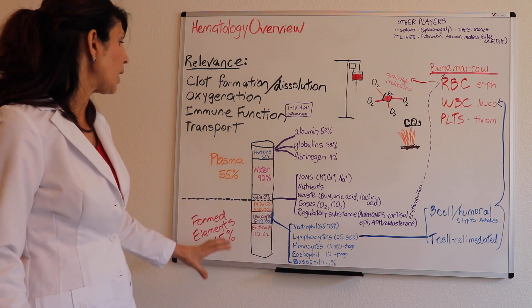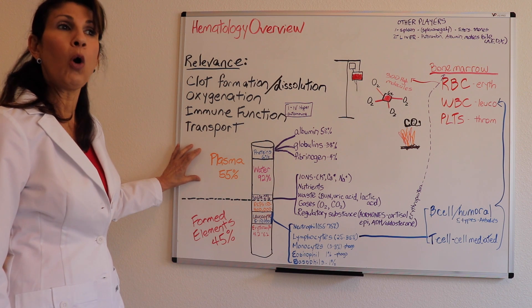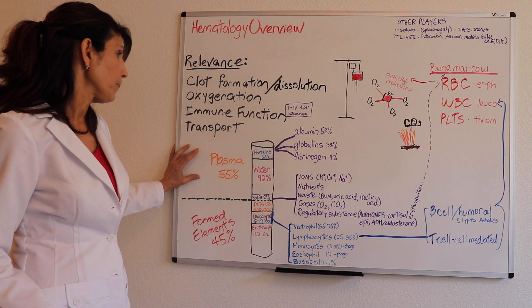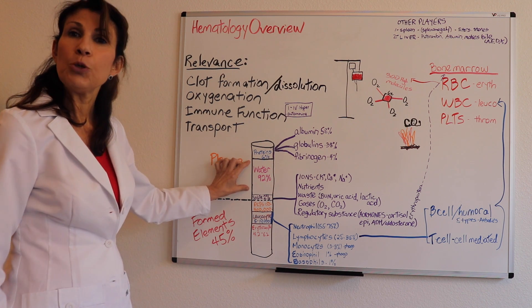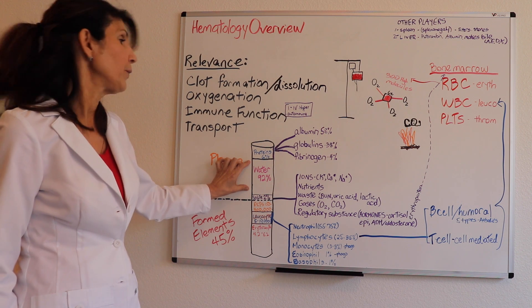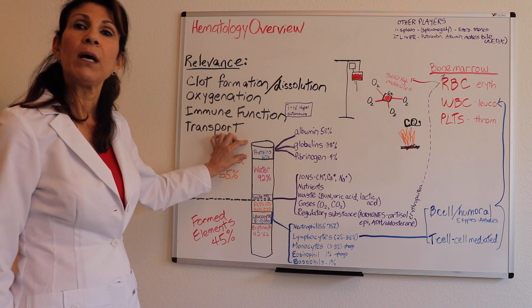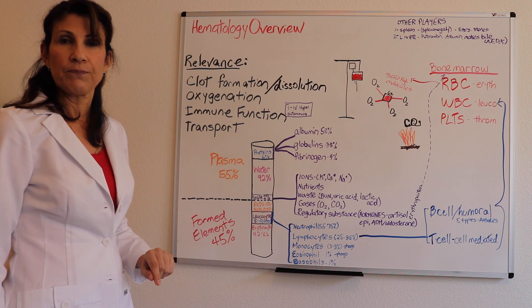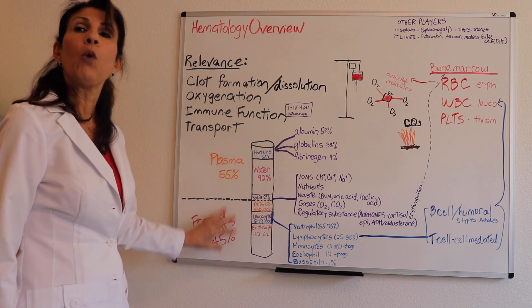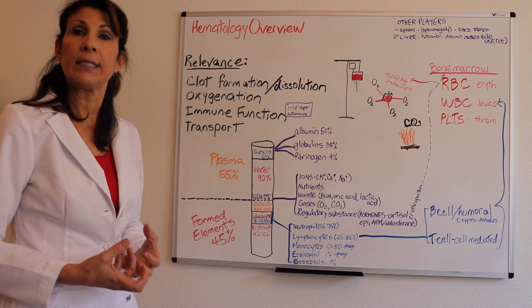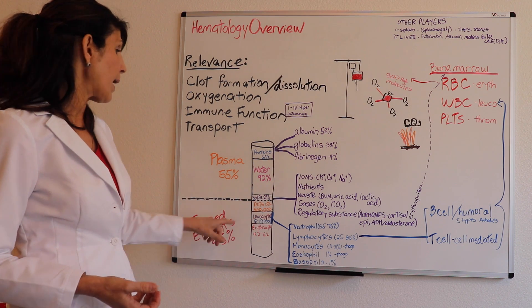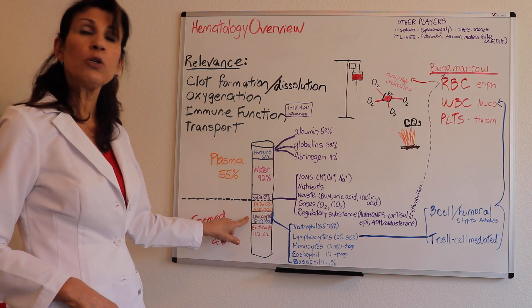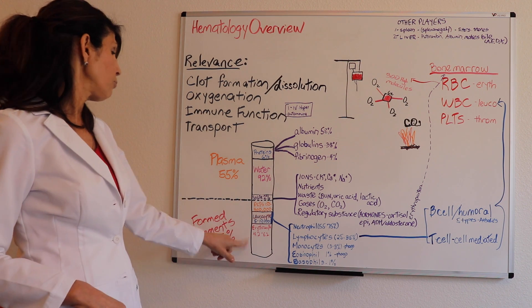Let's look at the components of whole blood. 55% of whole blood, the weight of whole blood, is comprised of plasma. Plasma is 92% water, 6% of that plasma are plasma proteins, and 2% are solutes. What's the rest of whole blood? The other portion are called the formed elements. The formed elements are the solids of the blood—the platelet or thrombocyte, the white blood cell or leukocyte, and the erythrocyte or red blood cell.